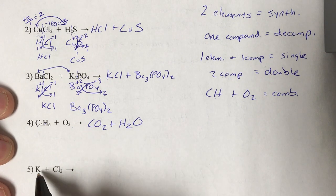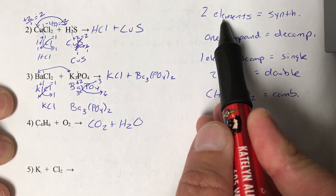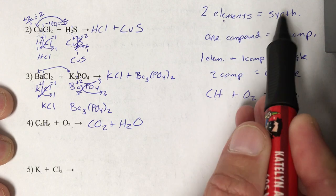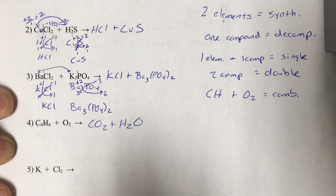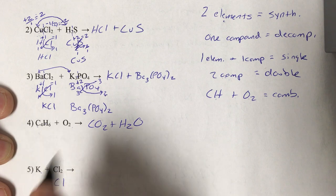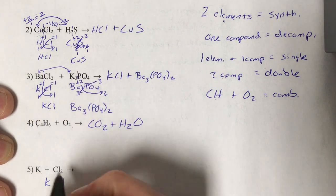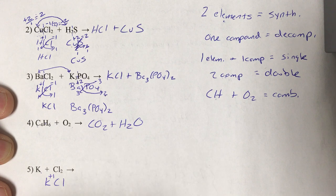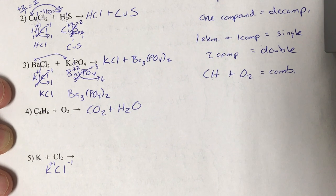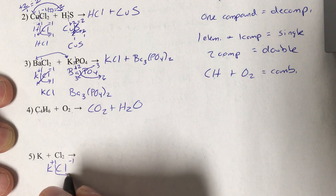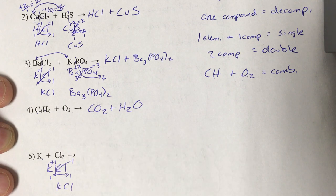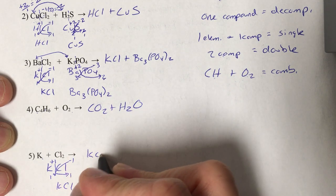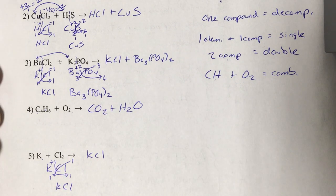Potassium and chlorine — two elements. Whenever I give you two elements, it's a synthesis reaction. All you're going to do is the crisscross method to figure out the formula. Potassium is in group one — plus one. Chlorine is in group 17 — minus one. We have a couple of ones to swap out. Don't write down the ones — it's just KCl. It's a synthesis reaction, so there's only supposed to be one product.